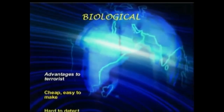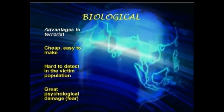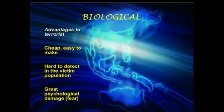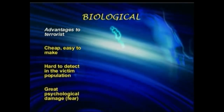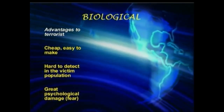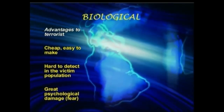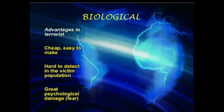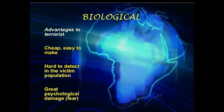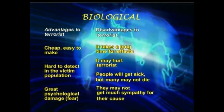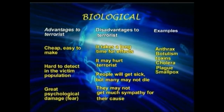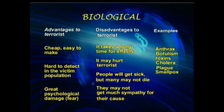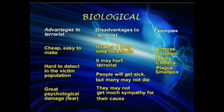The viruses and bacteria needed for biological weapons — those that cause mass illnesses, discomfort, and possibly death — are sadly easy to come by, but difficult to employ and diagnose. We humans have an inborn fear of plague-like terrorism because we feel that we cannot protect ourselves and those we love. However, the disadvantages to the potential terrorists mostly outweigh those advantages. Some examples of biological agents are anthrax, botulism, cholera, plague, and smallpox.